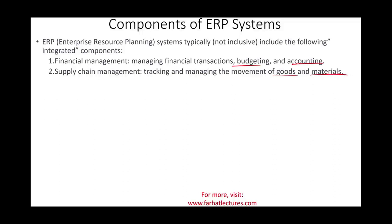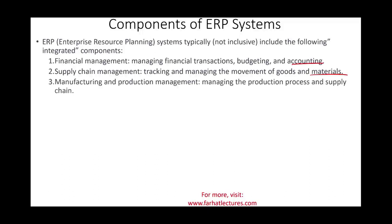Not all companies need every component. The banking, insurance, and financial management industries have no need for movement of material, so they won't have a supply chain component. Similarly, a manufacturing and production management module manages the production process — but service companies don't need that.